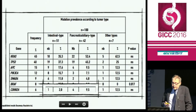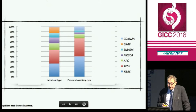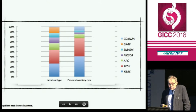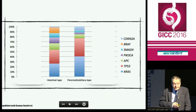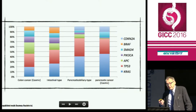There is also a non-significant increase in CDKN2A in the pancreaticobiliary type. Summarizing on this diagram showing the relative distribution of mutations, there is an increase of BRAF mutation in the intestinal type and probably an increase of KRAS and TP53 in the pancreaticobiliary type. Comparing to colon cancer and pancreatic cancer, intestinal types show similarity in relative distribution of mutations with colon cancer, while the pancreaticobiliary type is more similar to pancreatic cancer.